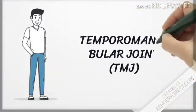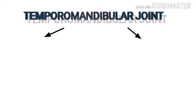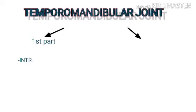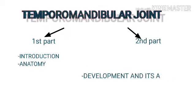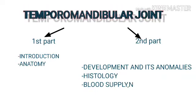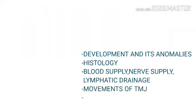Hello friends, welcome to my YouTube channel. Let's discuss the temporomandibular joint, TMJ. As you all know, TMJ is a complex joint, so the topic is also complex. Let's divide the topic into two parts: the first part covers introduction and anatomy, and the second part covers development, anomalies, histology, blood supply, nerve supply, lymphatic drainage, movements, and clinical considerations.